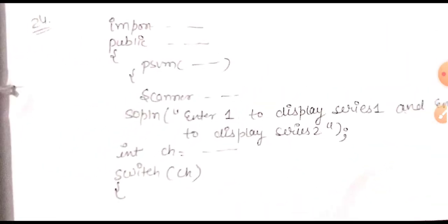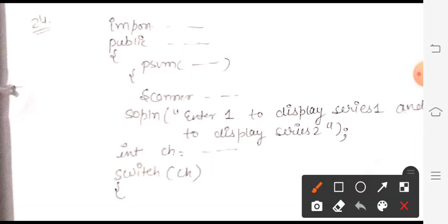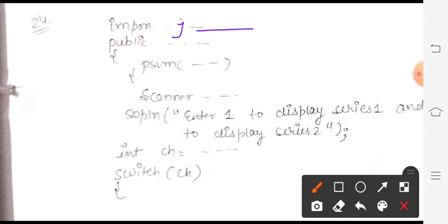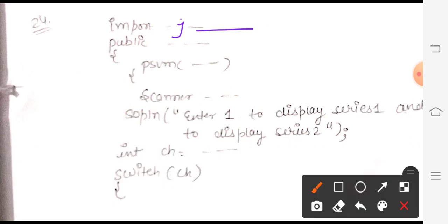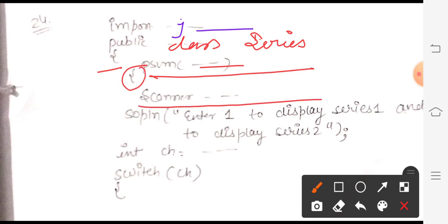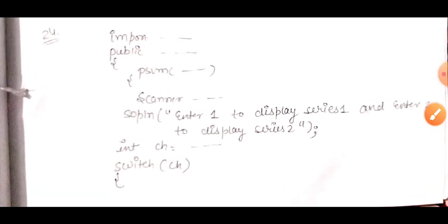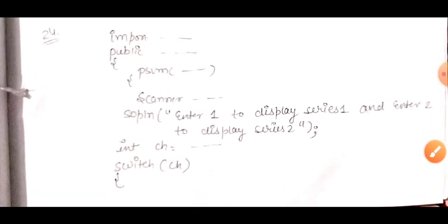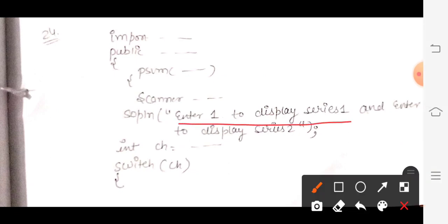Using menu driven, so write here import java.util - take the package yourself. Then take the class name: public class, you can take anything like public class Series, public class Number, whatsoever you want. Then opening bracket, public static void main String args, opening bracket. Complete the Scanner line by yourself. Then, because it is menu driven, we have to print the message: sopln enter 1 to display series 1 and enter 2 to display series 2.